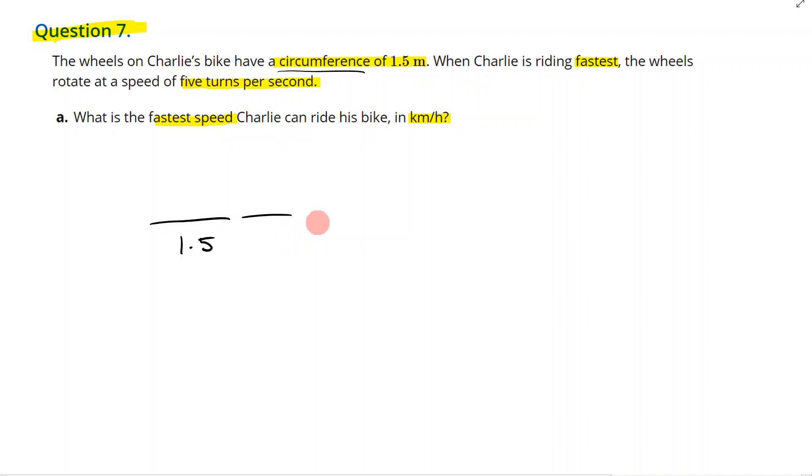Well, when he's going the fastest he can go five of these per second. So let's draw five of these. Let's pretend they're all the same length—they are all the same length. So each of these is 1.5. So there's five of them: one, two, three, four, five. And we know that he can travel this speed in one second.